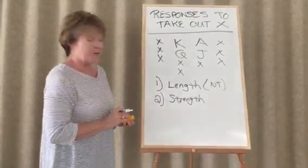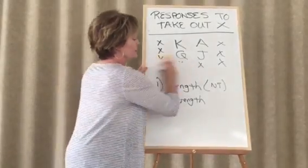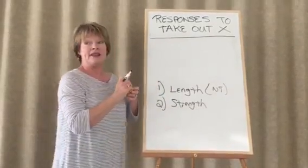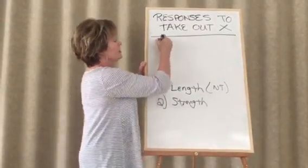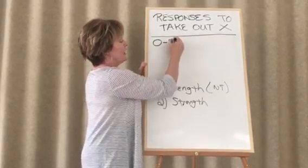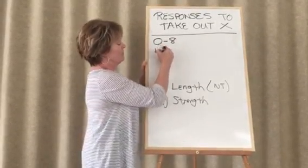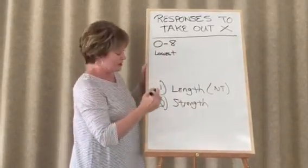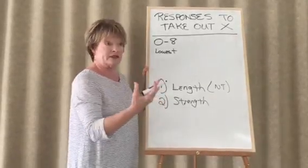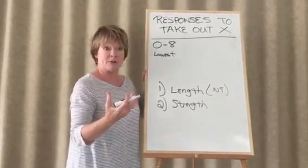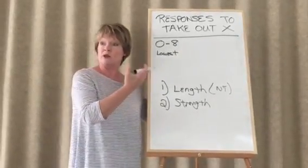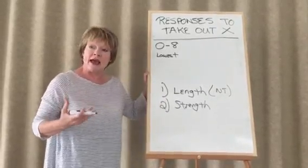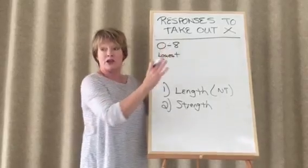So partner knows a little bit about the value of our hand. Because if you remember our point count ranges, the point count ranges I gave you last week were what I played, and they are one point below standard. We're going to play standard. So our point count range is zero to eight. We respond at the lowest level.